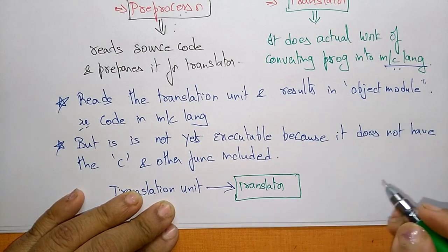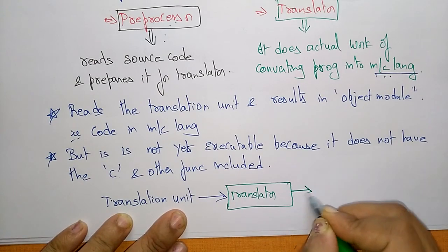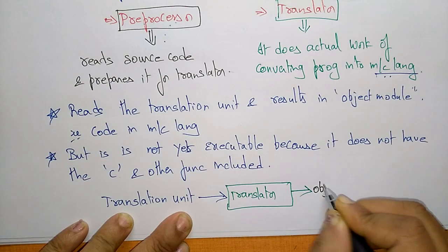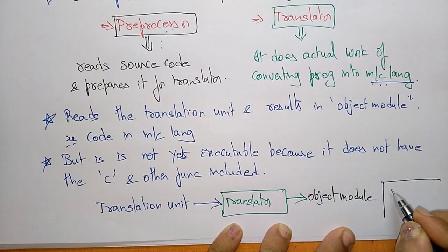The translator converts the source file, and the output is an object module. The object module is in the form of ones and zeros — the complete source file is converted into this binary form. This is saved as an .obj file. In the next video I will explain how to compile the program using the GCC compiler.